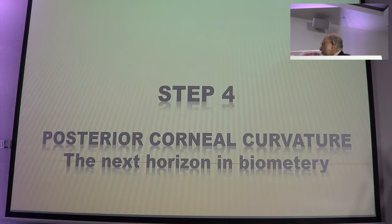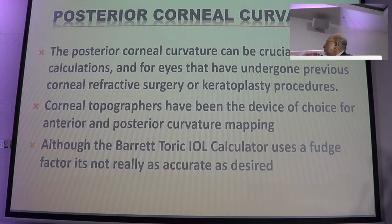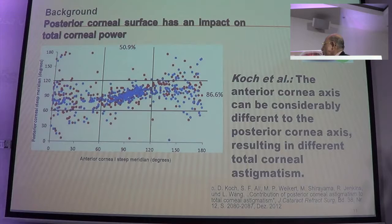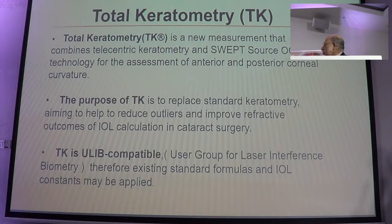What I want to bring up today is the role of the posterior cornea in the eye. The posterior cornea is crucial because once in a while you are presented with a case and you get surprised. Unless you are doing posterior keratometry, you will not be able to handle it. The posterior corneal surface has an impact on total corneal power, as has been discussed.